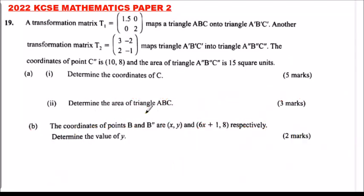This is 2022 KCSE Mathematics Paper 2, number 19. A transformation matrix T1, which is 1.5, 0, 0, 2, maps triangle ABC onto A'B'C'. Another transformation matrix T2, which is 3, -2, 2, -1, maps triangle A'B'C' onto triangle A''B''C''. The coordinates of C'' are (10, 8) and the area of triangle ABC is 15 square units.